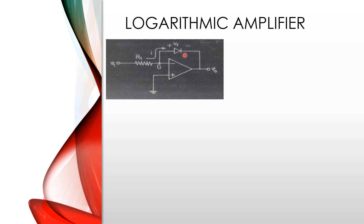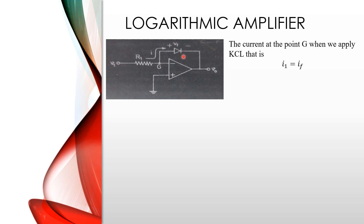So when we apply KCL — that means Kirchhoff's Current Law — at the point G, what we have to write? The current at point G: the entering current equals the leaving current, that means I1 equals I2. The entering current is I1 and the leaving current from node G is the feedback current. So I1 equals Ia.